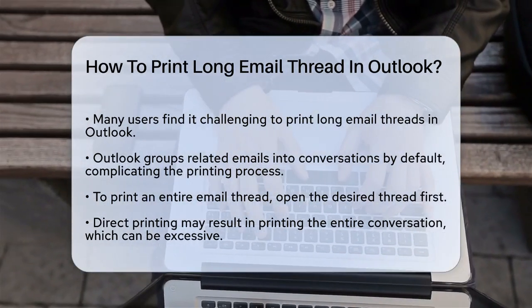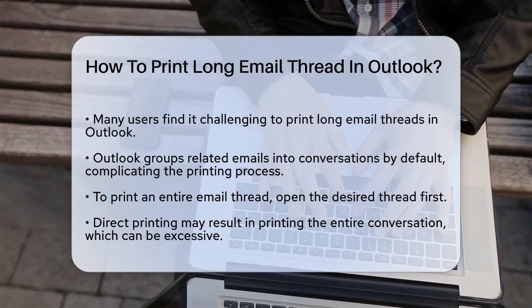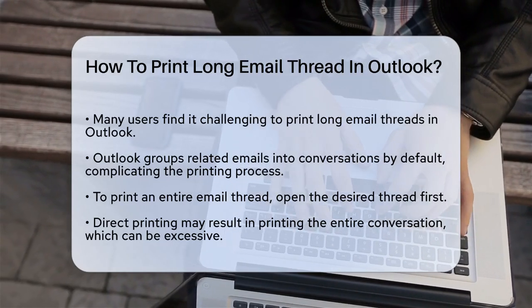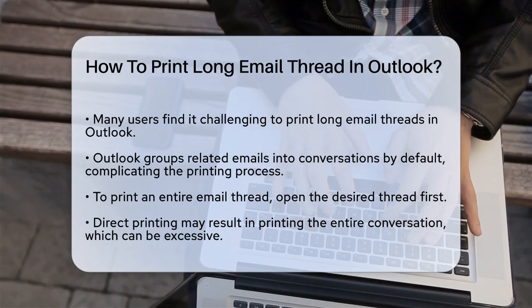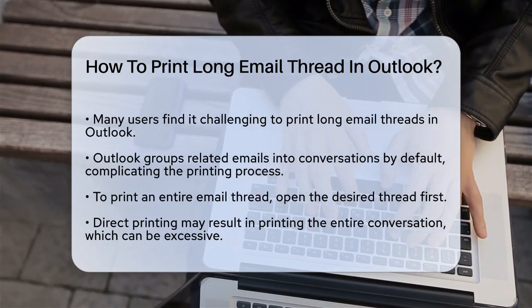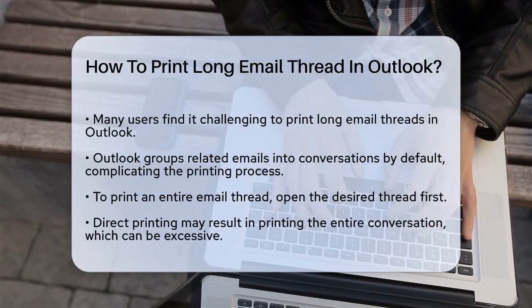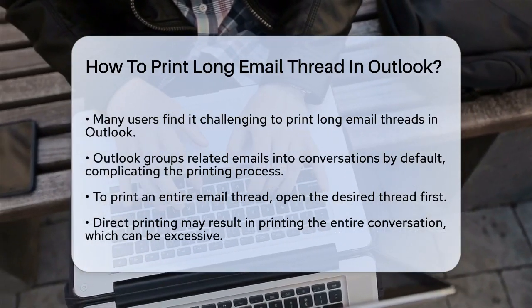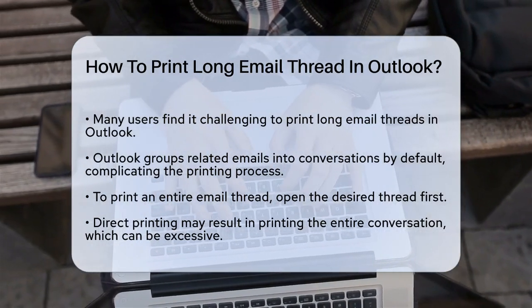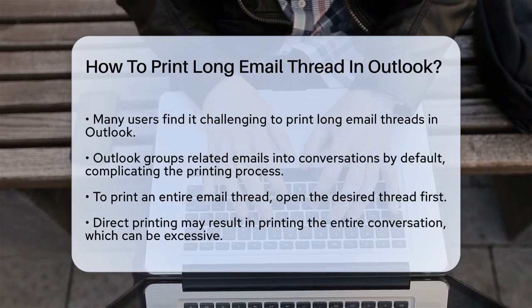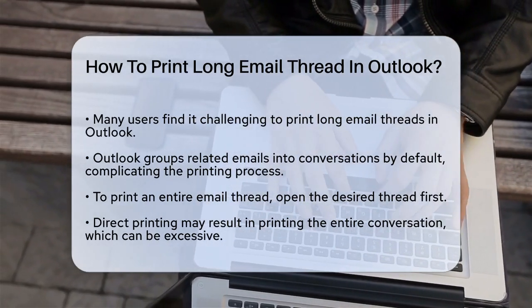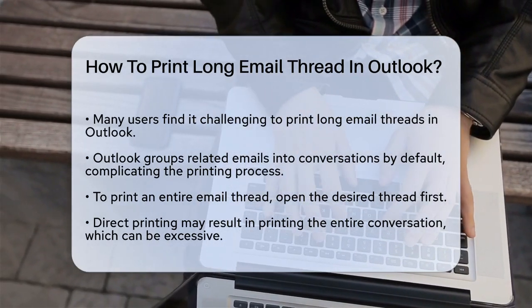Open the email thread you want to print. However, if you try to print it directly, Outlook might print the entire conversation, which includes all the replies and forwards. This can be overwhelming if you only need specific parts of the thread.